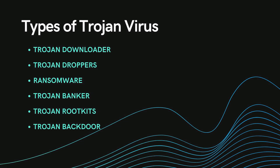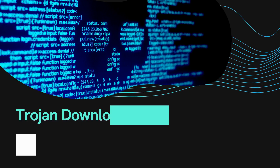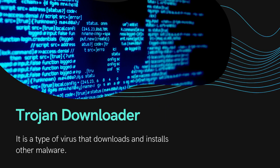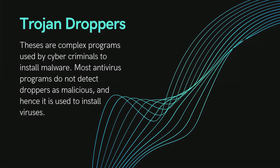Types of Trojan virus: Trojan downloader, Trojan droppers, ransomware Trojan, banker Trojan, rootkit Trojan, and backdoor Trojan. A Trojan downloader is a type of virus that downloads and installs other malware.